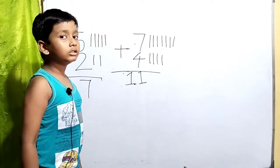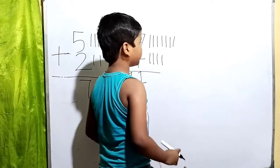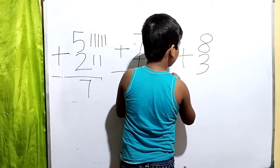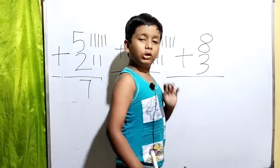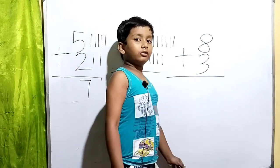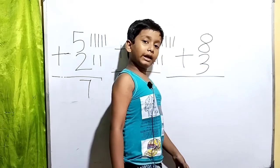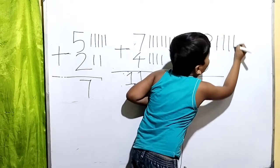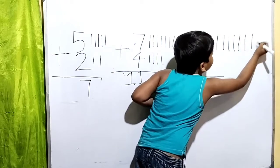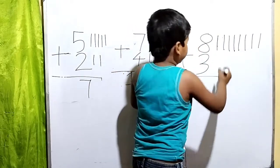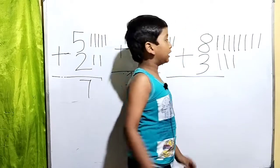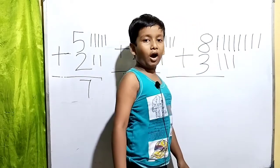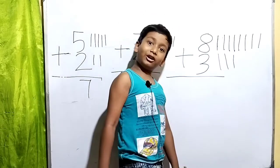The addition's answer is called the sum. Let's see the next problem. Eight plus three. What do we do? We have to draw eight lines: one, two, three, four, five, six, seven, eight. And now three lines: one, two, and three. Let's count: one, two, three, four, five, six, seven, eight, nine, ten, eleven. It's also eleven!